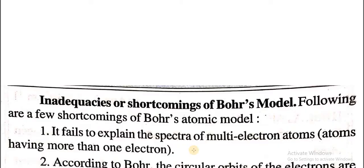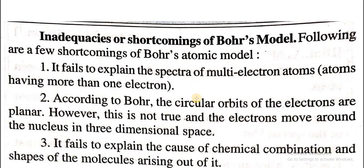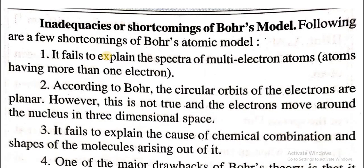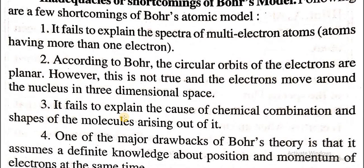The defects, or shortcomings, of Bohr's model are as follows. First, it fails to explain the spectra of multi-electron atoms; Bohr's theory can only explain atoms having one electron, like hydrogen. Second, according to Bohr, the circular orbits of electrons are planar; however, this is not true, and electrons move around the nucleus in three-dimensional space.